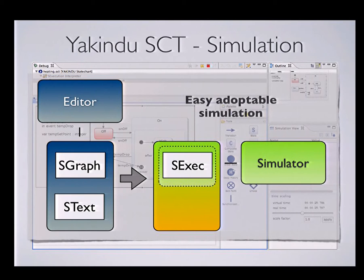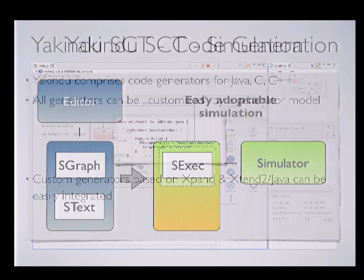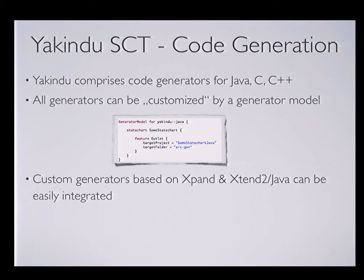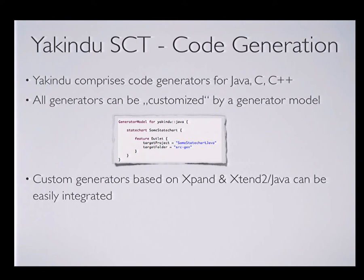So it is built for extensibility in that respect. We also deliver code generators with built-in support for Java and C, and we are working on C++ code generators. All these generators can be customized by so-called generator models, which are specified in an X-text language. You basically specify for which state chart you generate code, and by means of features you can parameterize the code generator — for instance, specifying the output folder or how code gets inlined.